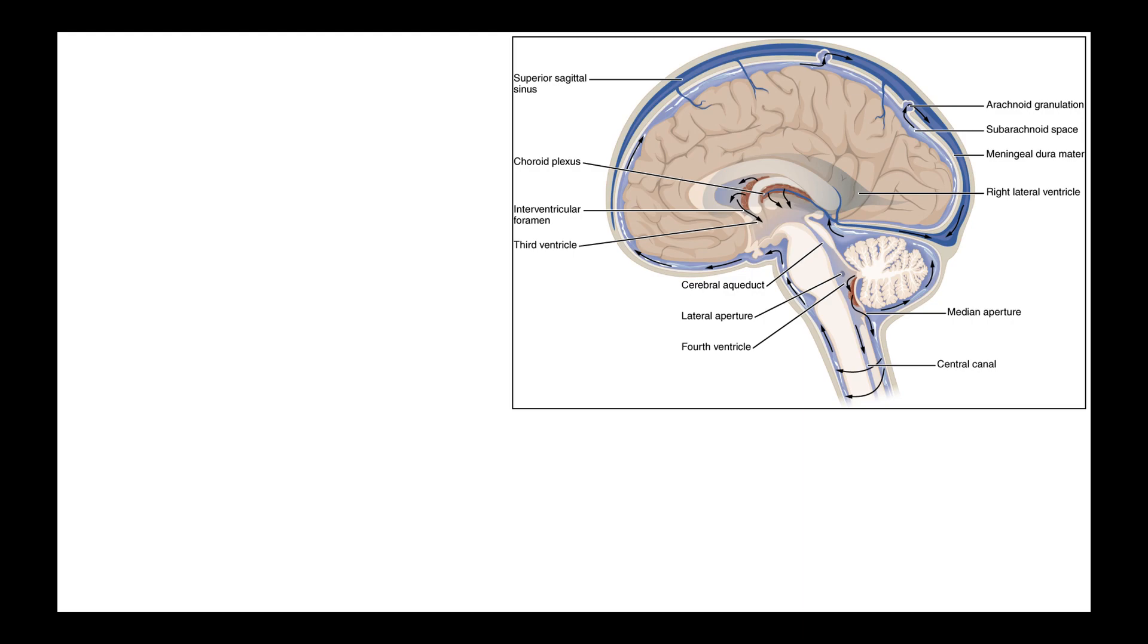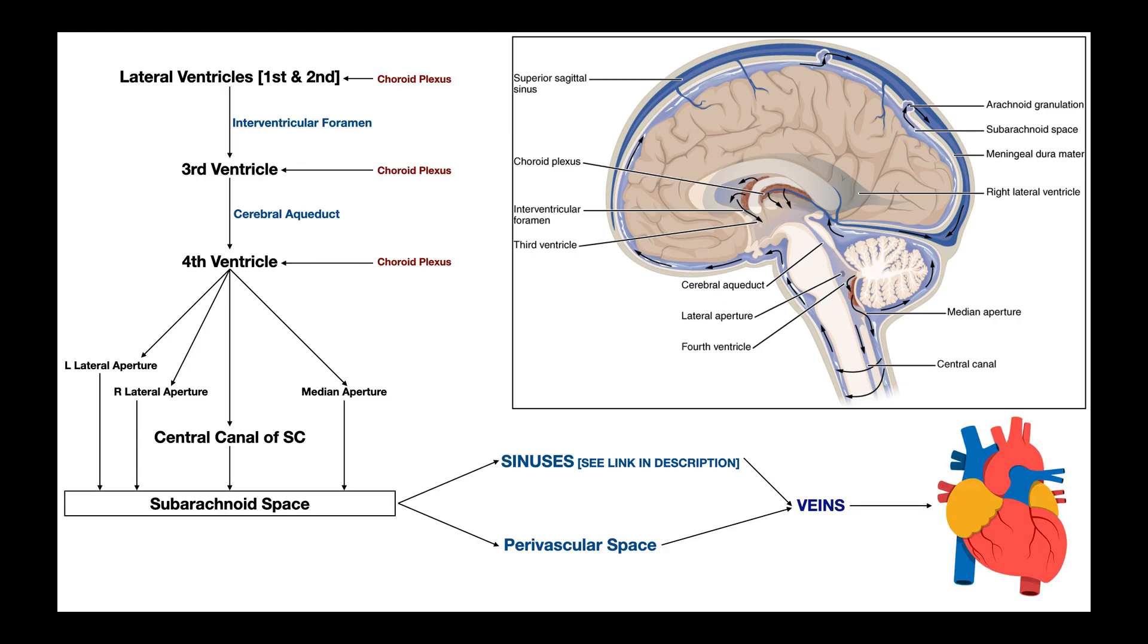In this video we're going to be talking about the basics of the glymphatic system, not the lymphatic system that we talk about in other videos. This is the glymphatic system with a G, which is responsible for waste clearance from the brain. But before we do that, let's do a brief review of the flow of cerebrospinal fluid through the brain.